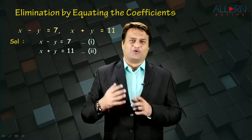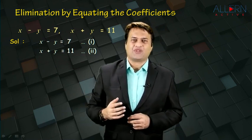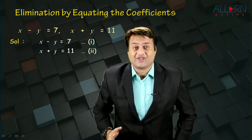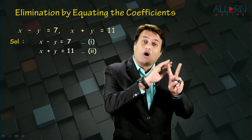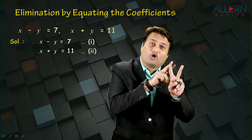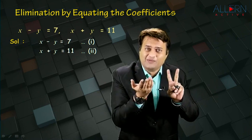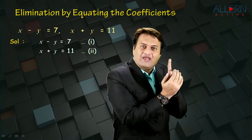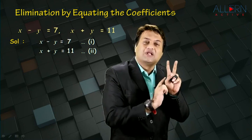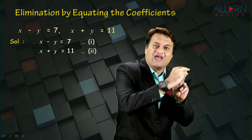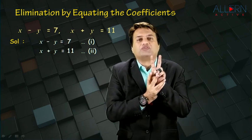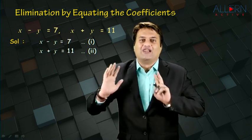Now, what is this method all about? Elimination by equating the coefficients. When we say elimination, it means we need to eliminate something — eliminate one of the two variables. You need to either eliminate x or eliminate y. When we eliminate y, we are left only with x and directly get the value of x. Similarly, if you eliminate x, we are left with y and directly get the value of y. So we need to eliminate one of the two variables so that you get the value of the other variable.